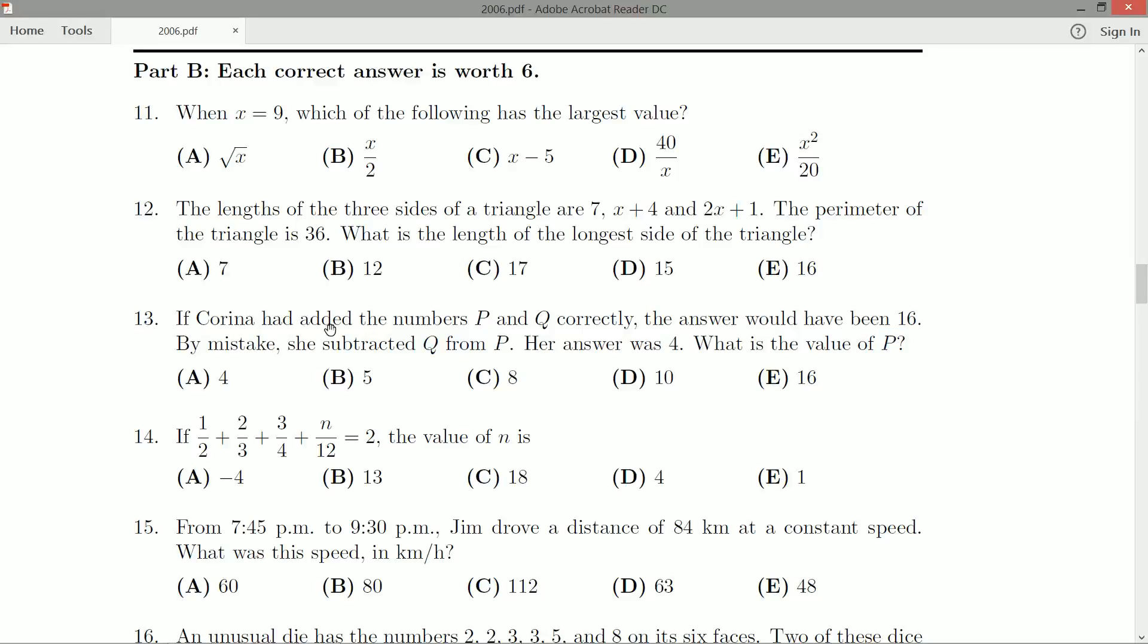Okay, so if we can take the statements about Karina and her mathematical skills, her arithmetic, and turn them into equations ourselves, we would be able to see P plus Q. We add them together. P plus Q is 16.